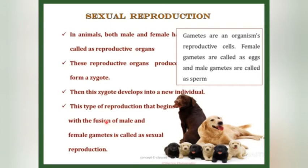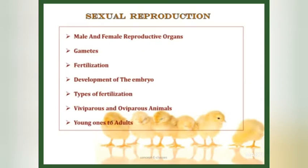Sexual reproduction is a reproduction in which male and female gametes fuse together to form a new individual. The sub-topics we will cover are: male and female reproductive organs, gametes, fertilization, development of the embryo, types of fertilization, viviparous and oviparous animals, and young ones to adults.